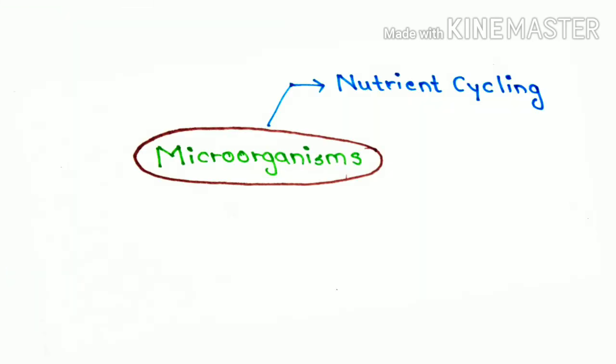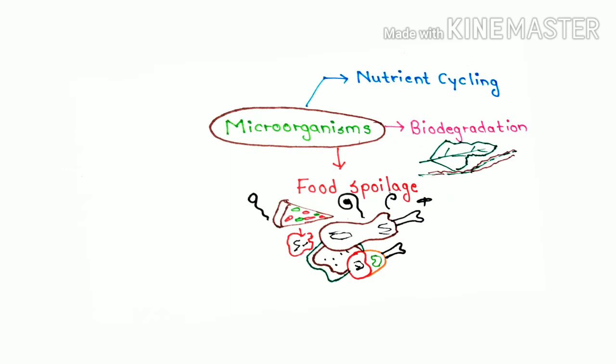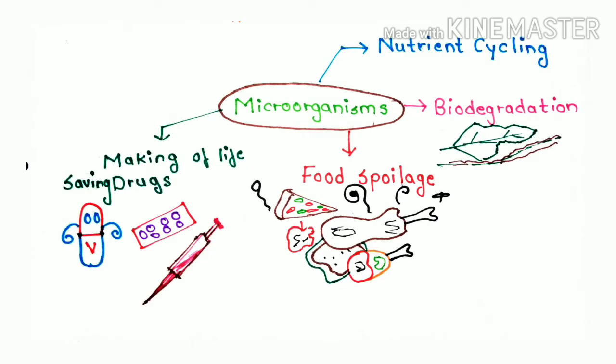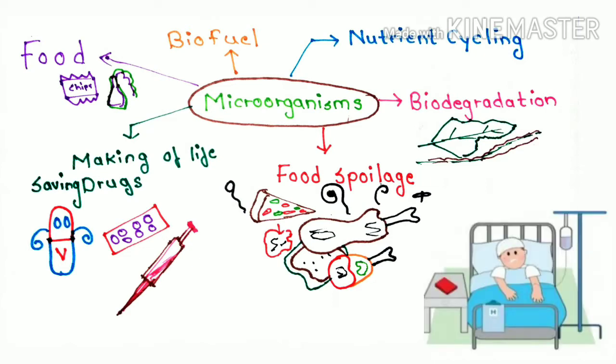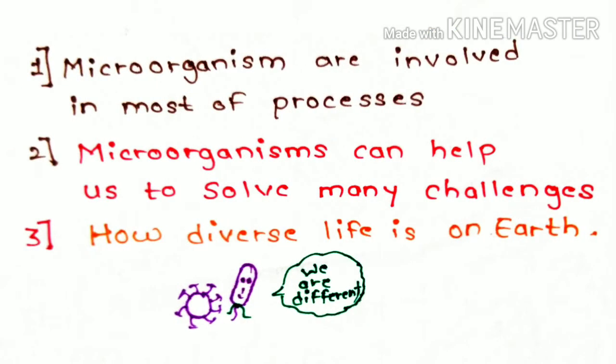Microorganisms play a key role in nutrient cycling, biodegradation, food spoilage, making of life-saving drugs, processing and producing food and drinks, manufacturing of biofuels, cause and control of diseases and many more processes on the earth. Due to versatility of microorganism in almost every processes, which makes it of great importance to study the field of microbiology.